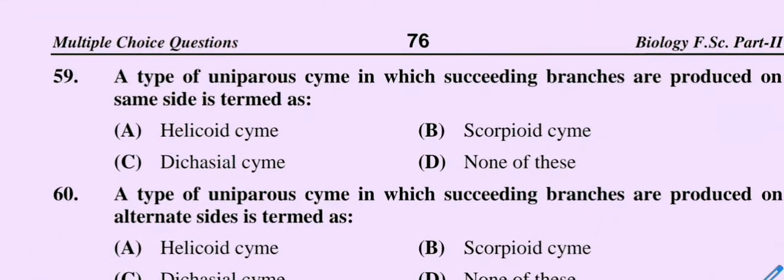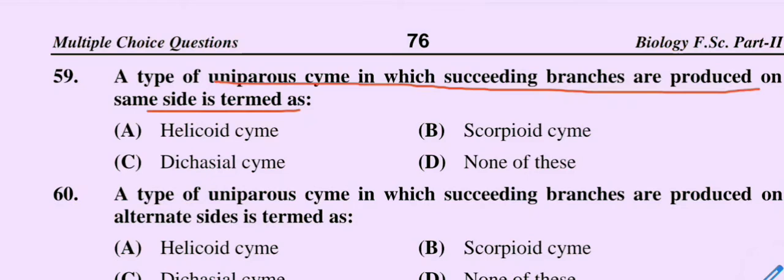Question number 59: A type of uniparous cyme in which succeeding branches are produced on the same side is termed as — option A helicoid cyme, option B scorpioid cyme, option C dichasial cyme, option D none of these. The correct option is option A, helicoid cyme.